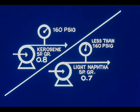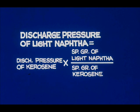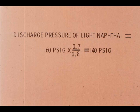Here's another example. Suppose this same pump were to pump a light naphtha, specific gravity 0.7. Then the discharge pressure would be less than when pumping kerosene, specific gravity 0.8. To calculate the value of this lower discharge pressure, simply multiply the kerosene discharge pressure times the specific gravity of light naphtha divided by the specific gravity of kerosene. The light naphtha discharge pressure equals 160 times 0.7 divided by 0.8, or 140 psig.